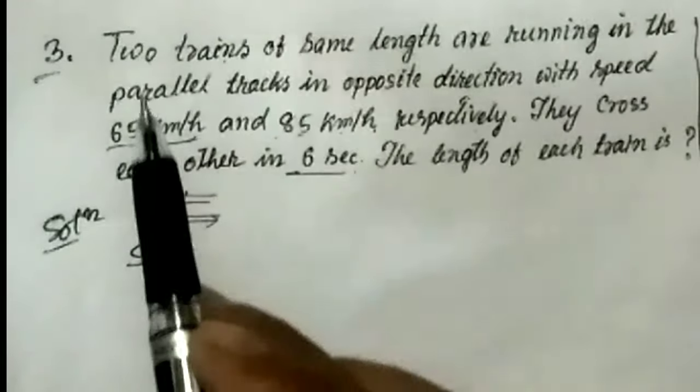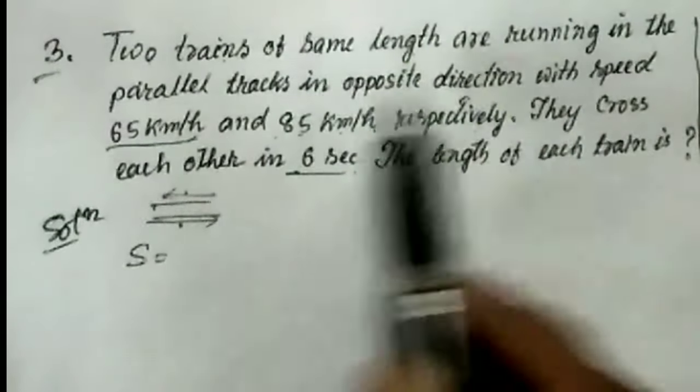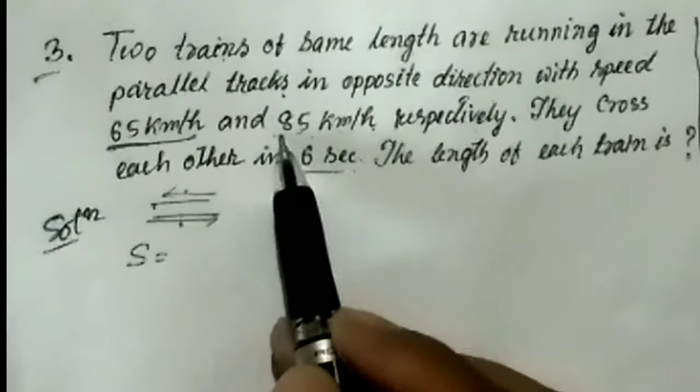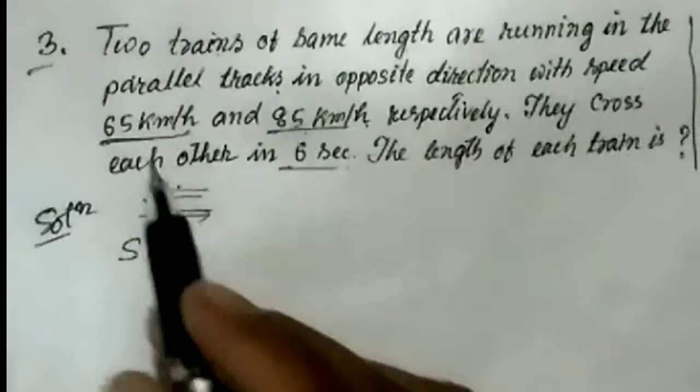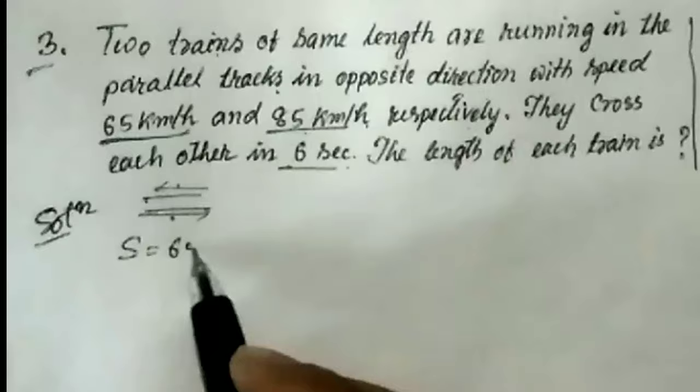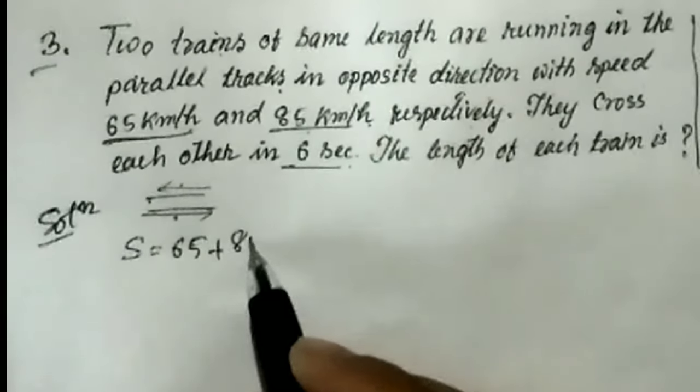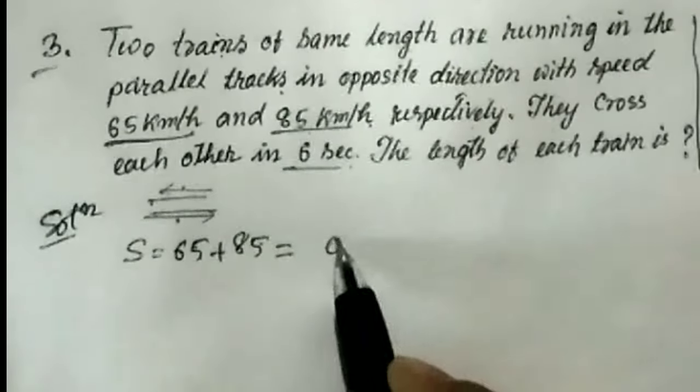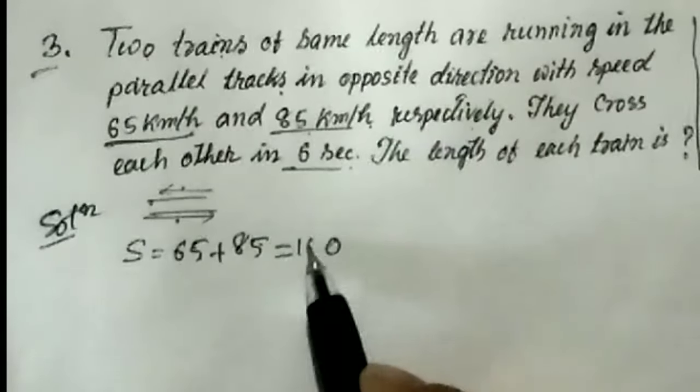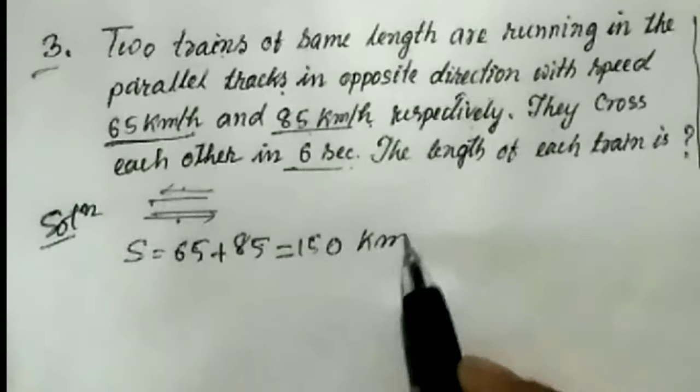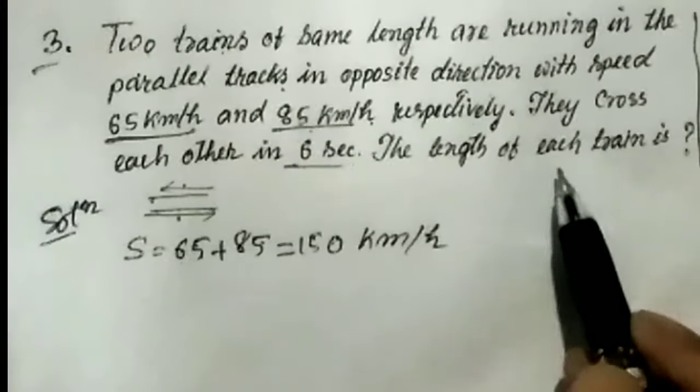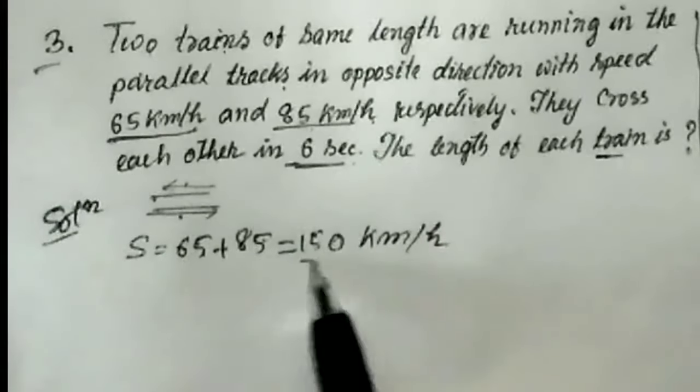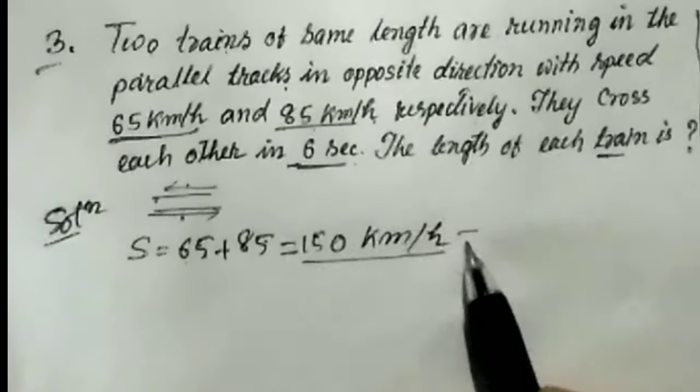Two trains of same length are running in the parallel tracks in the opposite direction with speed 65 kilometer per hour and 85 kilometer per hour. When trains move in opposite directions, we add their speeds to get relative speed.